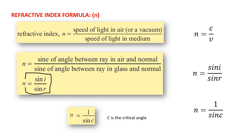Here are the three important formulas of refractive index. First, N = C/V, where C is the speed of light in air or vacuum and V is the speed of light in any medium. Second, N = sin I / sin R, where I is the angle of incidence and R is the angle of refraction. The key point is that the angle of incidence must always be in the less dense medium — keep this in mind while solving problems. Third, N = 1 / sin C, where C is the critical angle.